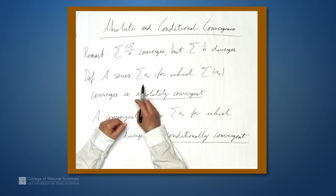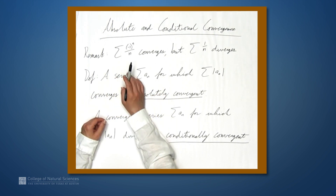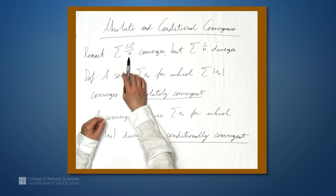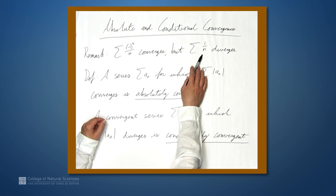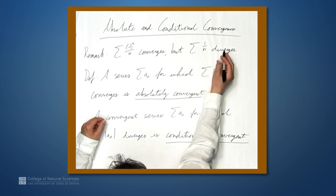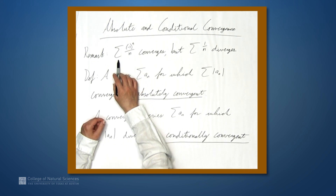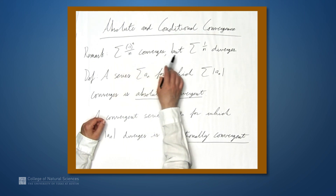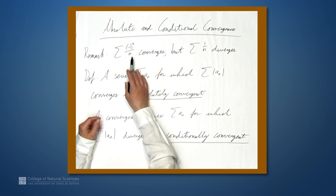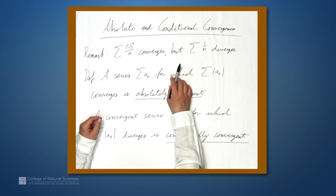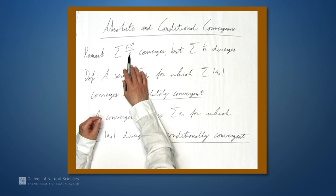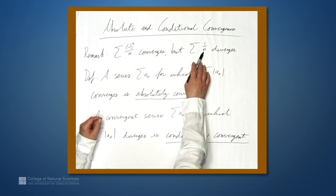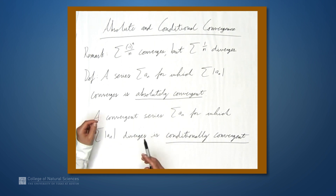We're here at the example table, and in this video we're going to be talking about absolute and conditional convergence. As a little motivator, note that the alternating harmonic series converges, but the harmonic series — just the sum of 1 over n — diverges. The divergence isn't determined by where we start, so sometimes the limits will be omitted. The alternating version converges, the non-alternating version diverges. This motivates the definition.